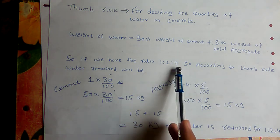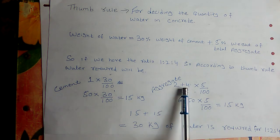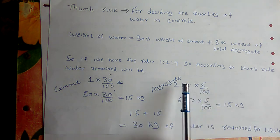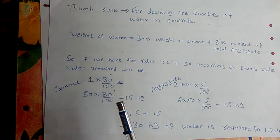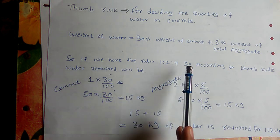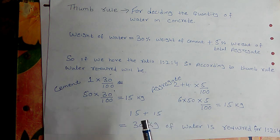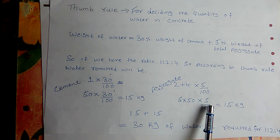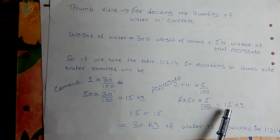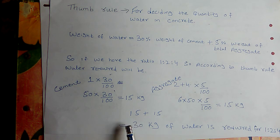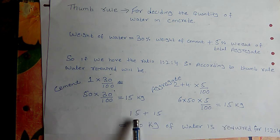For aggregate: (2 + 4) = 6 parts aggregate. So 6 × 50 × 5 ÷ 100 = 15 kg from aggregate. Adding both: 15 + 15 = 30 kg of water is required for a 1:2:4 concrete mix per bag of cement.